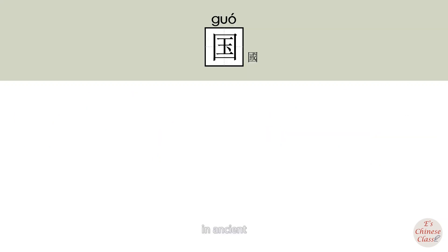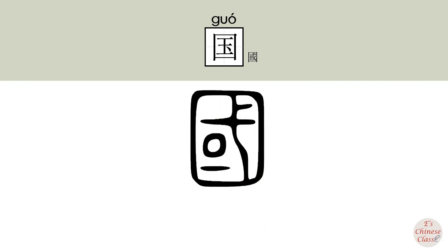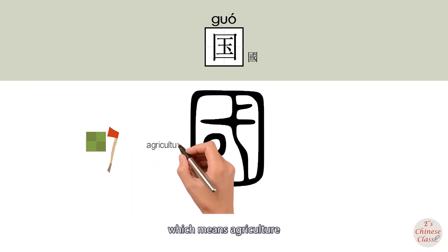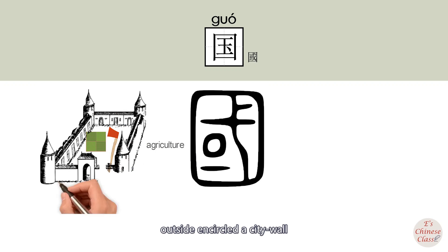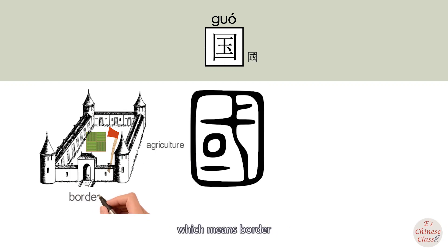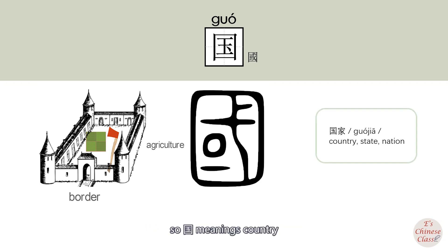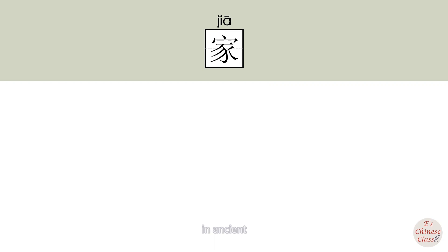In Ancient Chinese, 国 was written with the inside part referring to farmland and agriculture. Outside encircles a city wall, which means border. Border and agriculture are two signs of the ancient country's establishment. So, 国 means country.